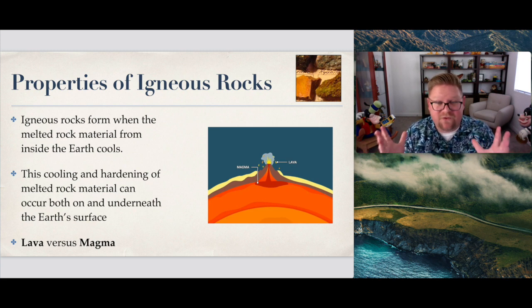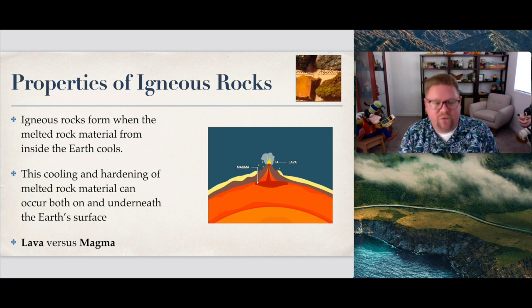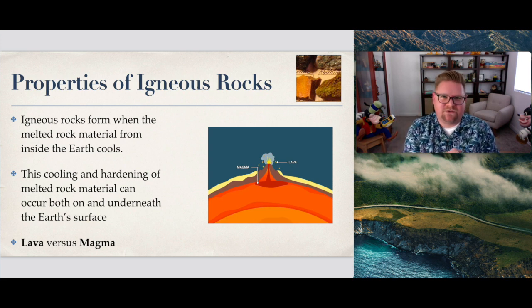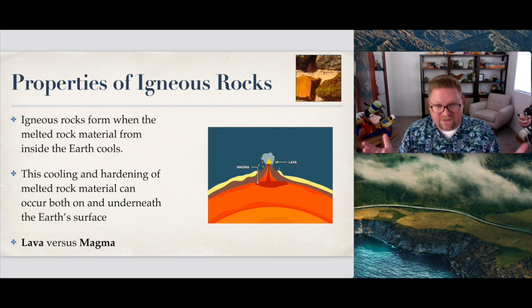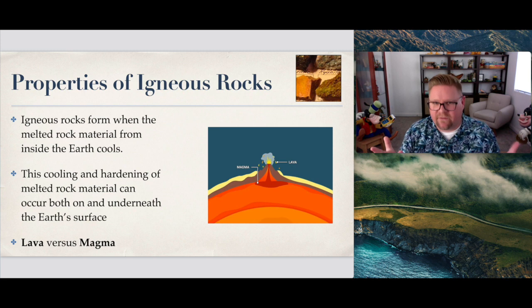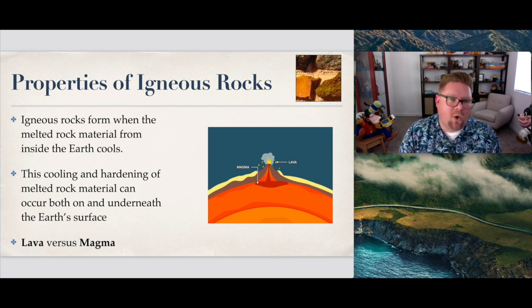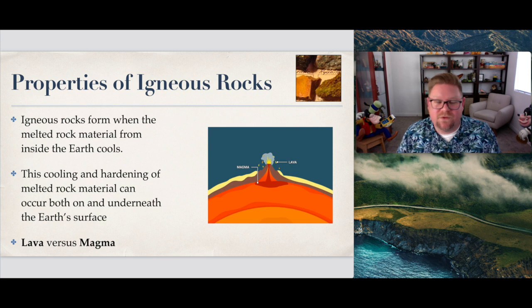Lava and magma are two very different terms — sometimes people use them interchangeably, which isn't correct. Lava is what we see on the surface. If it's unseen and underneath the surface, we call that molten magma. Once it reaches the surface, it becomes lava. That's the difference.